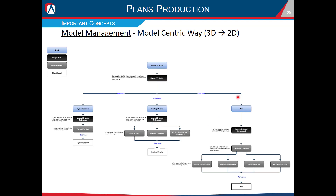In the last scenario — the pier detail sheet — we again have a separate DGN file with a design model referencing the master 3D model. We isolate the pier, and the first cut is the front elevation view. Then, within that front elevation drawing model, we make section cuts to create column section cuts one and two, a cap section cut, and a pier side elevation view. So these are cuts within cuts. All five drawing models then get referenced onto the final sheet model — the final plan deliverable.